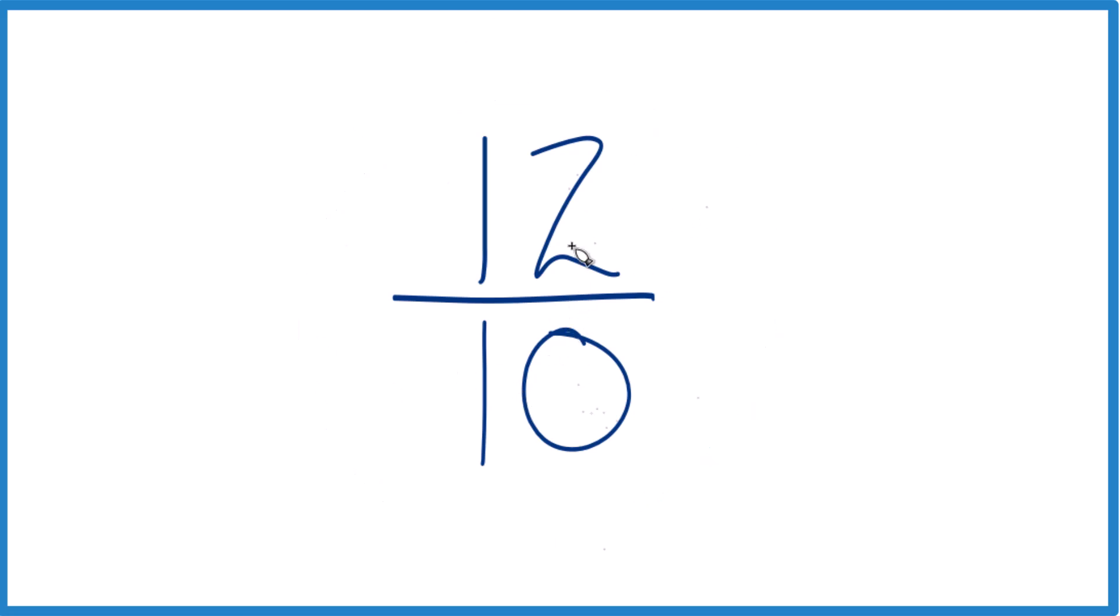So when we simplify fractions, we want to find something that goes into 12 and 10 evenly. We're looking for a common factor. Since these are both even, I'm just going to cut each one in half, divide each one by 2.